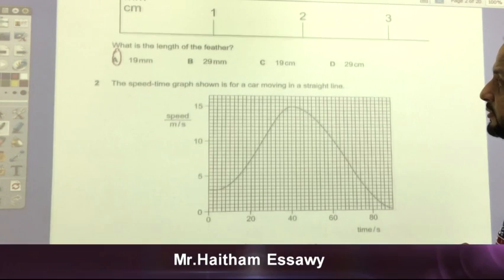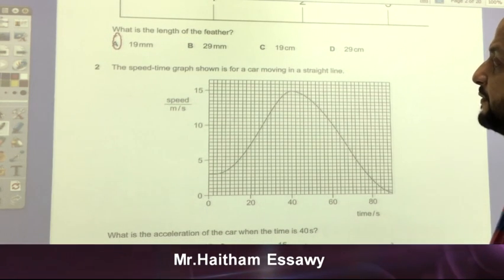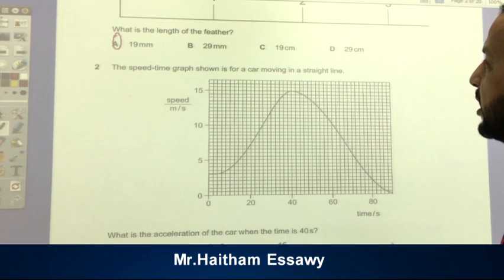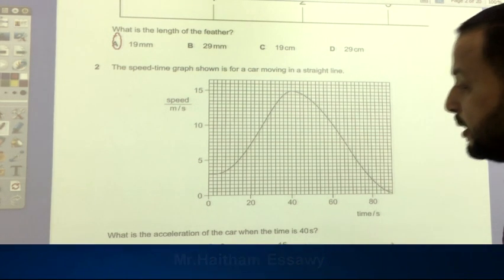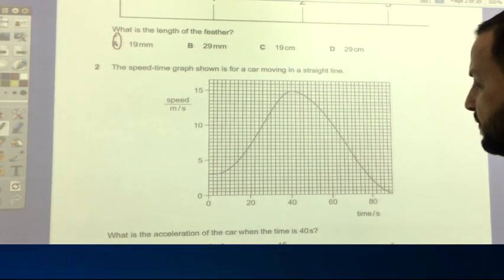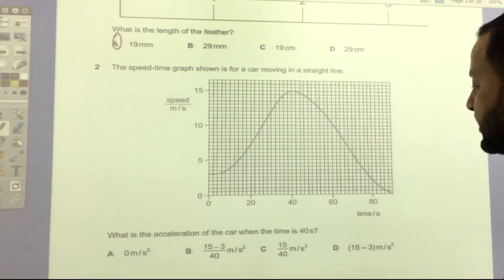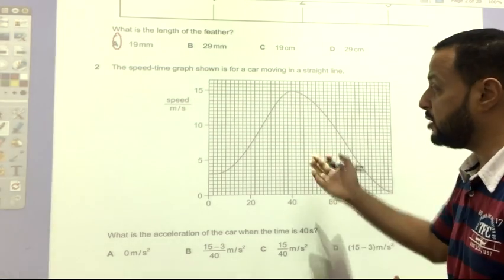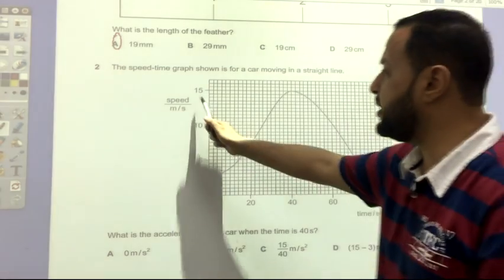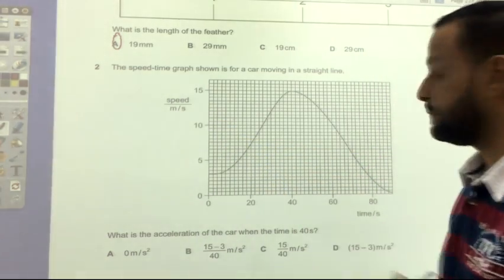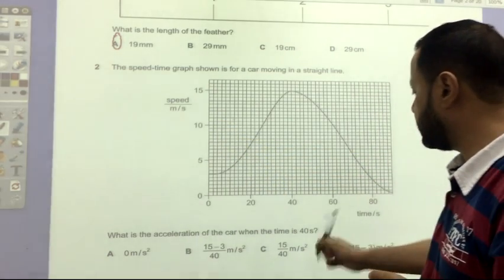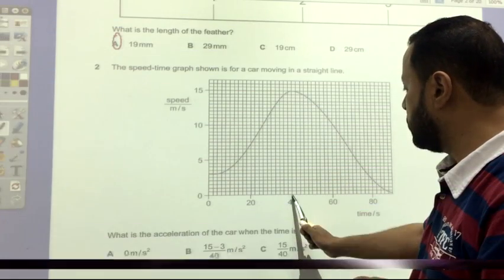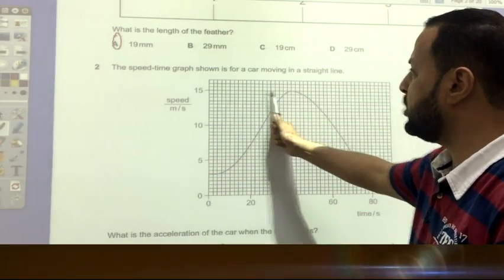After that, the speed time graph shown is for a car moving in a straight line. What is the acceleration of the car when the time is 40 seconds? If you look to this graph, relation between speed and time, you can't say that the time is 40 seconds. When the time equals 40, the speed equals 15.